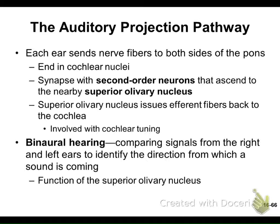From the cochlear nuclei, the second-order neurons go to the superior olivary nucleus — another cluster of cell bodies. That sends some feedback signals back to the cochlea for tuning. This is also where the tympanic reflex originates. With a loud noise, two muscles help protect you: the tensor tympani, which tenses the eardrum to make it harder to vibrate, and the stapedius, which pulls back on the stapes to reduce energy entering the oval window.